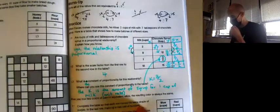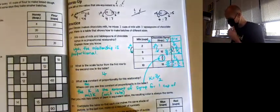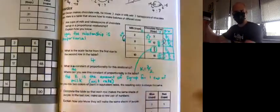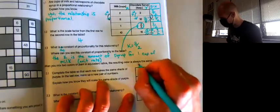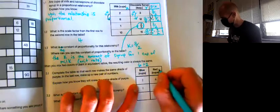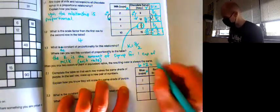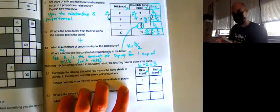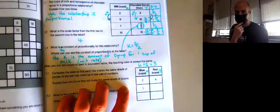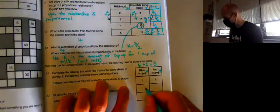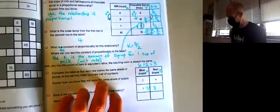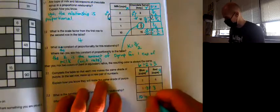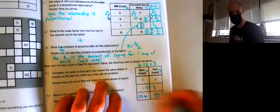Complete the table so that each row makes the same shade of purple, and the last row make up a new pair of numbers. We want to make sure this table turns out proportional, so we just got to make sure the ratios are all equivalent. Six divided by two, so I'm thinking this is y, this is x, and I'm doing y divided by x equals three. So my ratio between blue and red is three. I need three red for every one blue, so one times three equals three. And then in the last row, as long as whatever numbers I choose the blue times three equals the red I'm good. I could be like 10, and then over here 30.